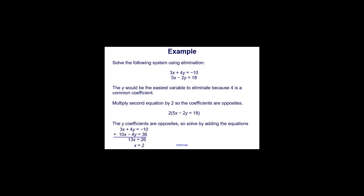We have the system 3x plus 4y equals negative 10, and 5x minus 2y equals 18. We can see that we don't currently have the same coefficients or opposite coefficients, but the y variable would be the easiest variable to eliminate because 4 is a common coefficient of negative 2. We know that 2 times 2 is 4, so negative 2 times 2 would be negative 4 — more in common than the x coefficients of 3 and 5.